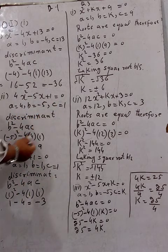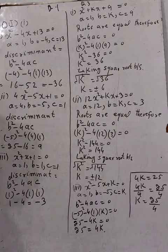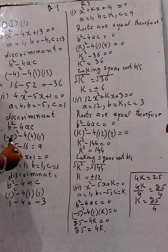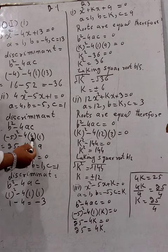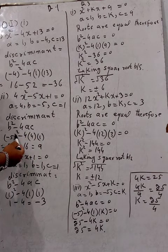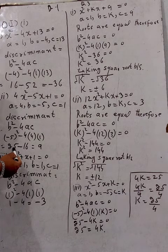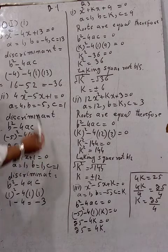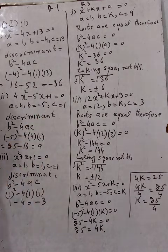The discriminant equals b squared minus 4ac. With b equals minus 5, we have minus 5 squared equals 25, minus 4 times 4 times 1 equals minus 16. So 25 minus 16 equals 9. The discriminant is equal to 9.